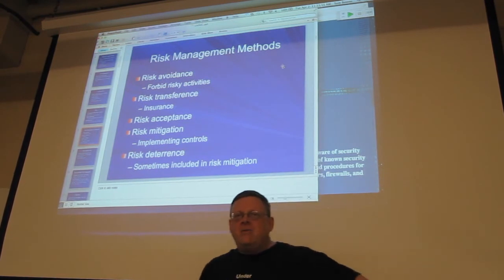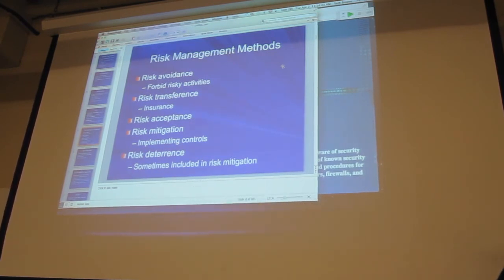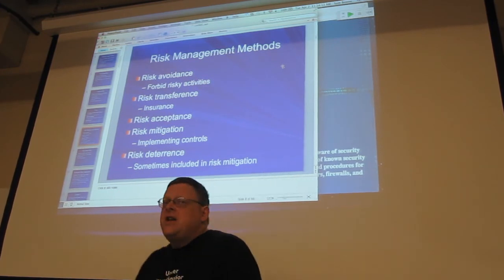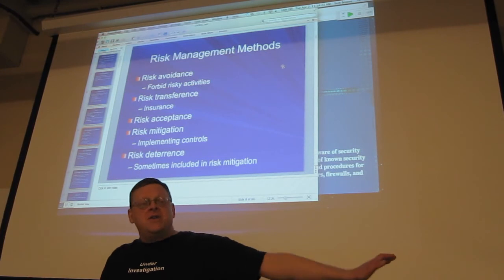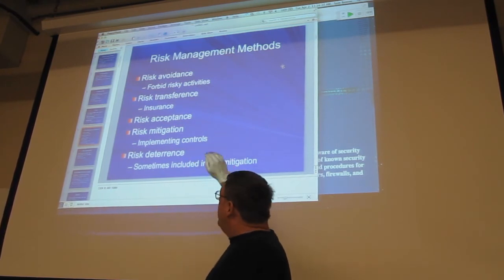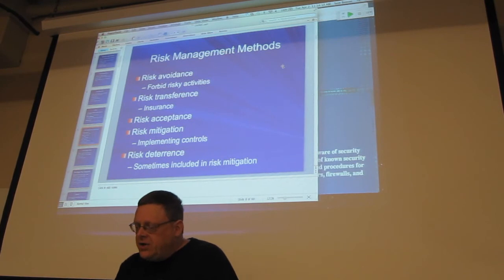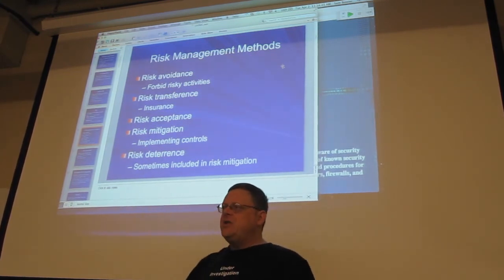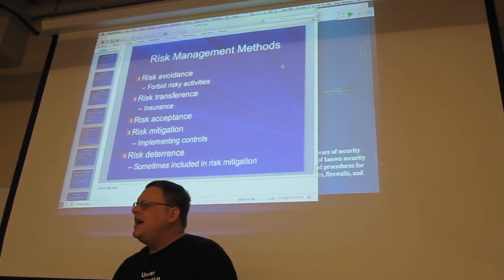Risk transference is making it somebody else's problem — that's what insurance is for. Risk acceptance is of course the most common one. Companies that do not have any formal risk analysis procedure are doing risk acceptance — they just take the risk. Studies show half the businesses in America have no disaster recovery plan at all; if there's a disaster, they go out of business — that's risk acceptance. Risk mitigation means doing something to limit the risk, typically adding something like guards, antivirus, or firewalls. Risk deterrence lowers risk by scaring away the attacker — like putting up a sign saying there's a dog when there is no dog. It doesn't actually stop an attack but might scare away some attackers.